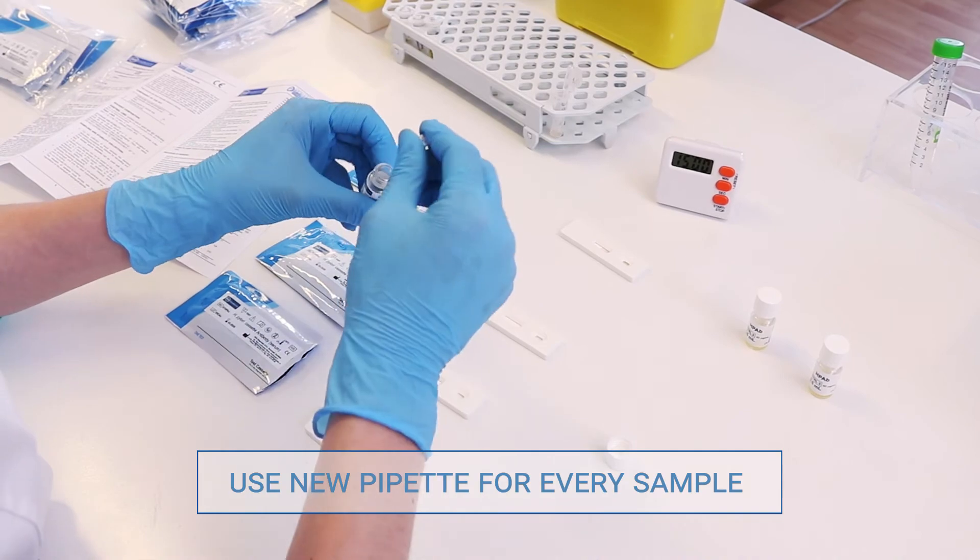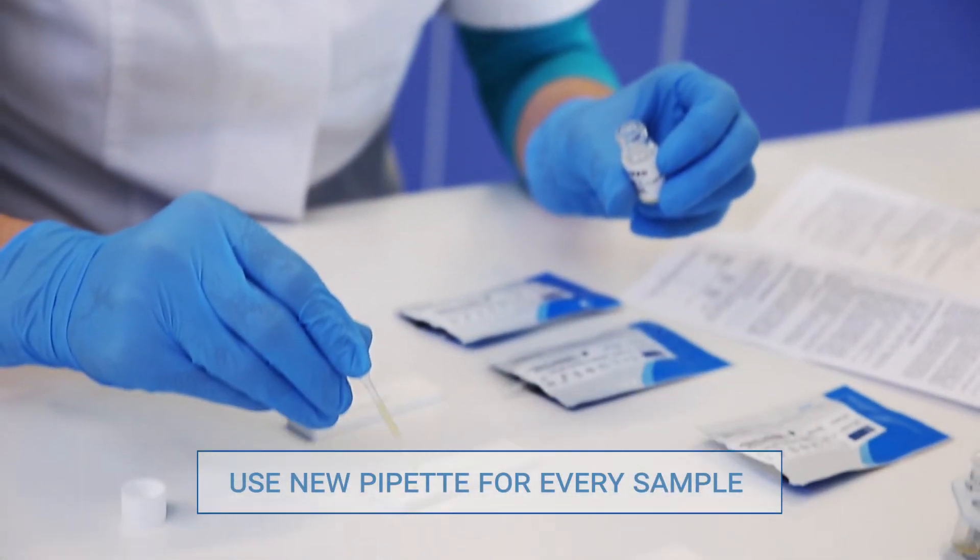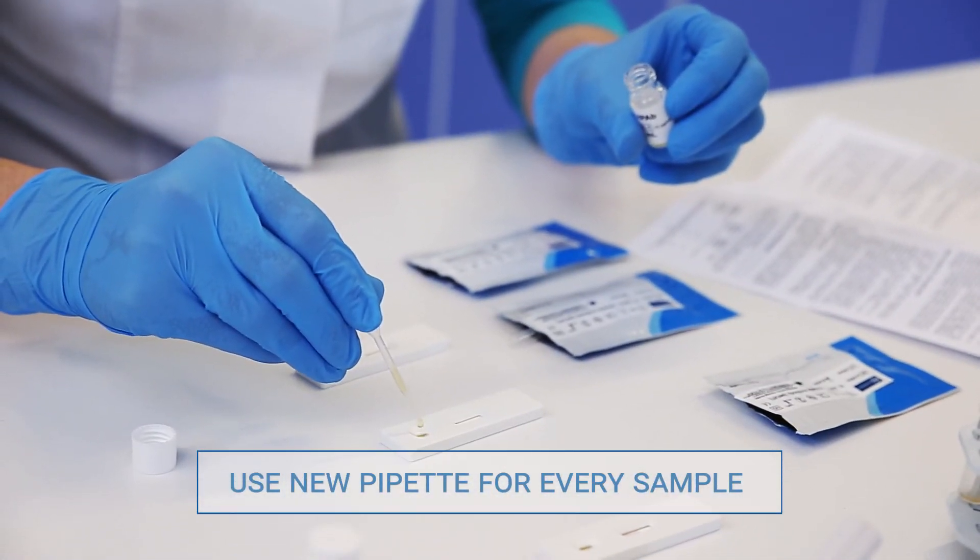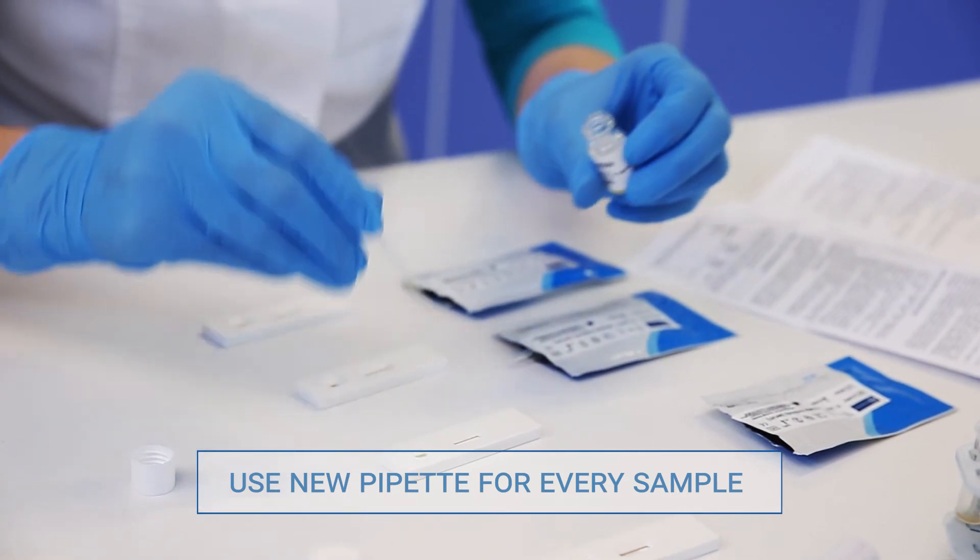With a pipette, add 2 drops of control serum with a 13 microgram per milliliter concentration into the sample well.